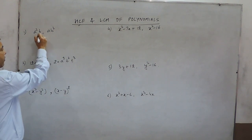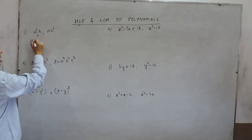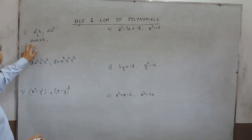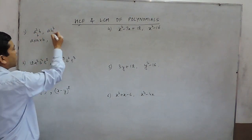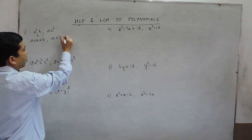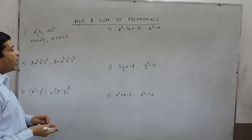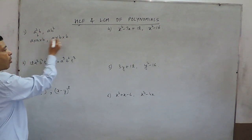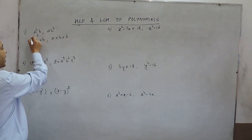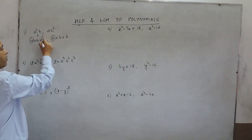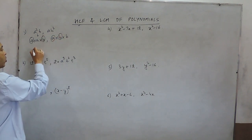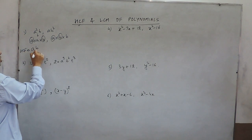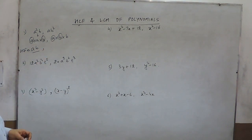So basically, we have to look at all the factors. For example, a²b has factors a, a, and b, while ab² has factors a and two b's. When we talk about the highest common factor, we have to look at what is common in these two. A is common, and b is also common in both terms. So ab will be considered as the HCF of these two monomials.